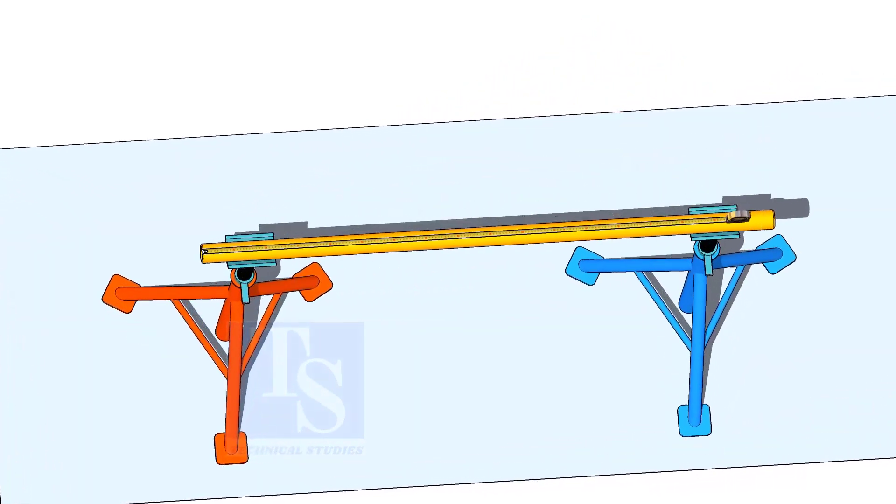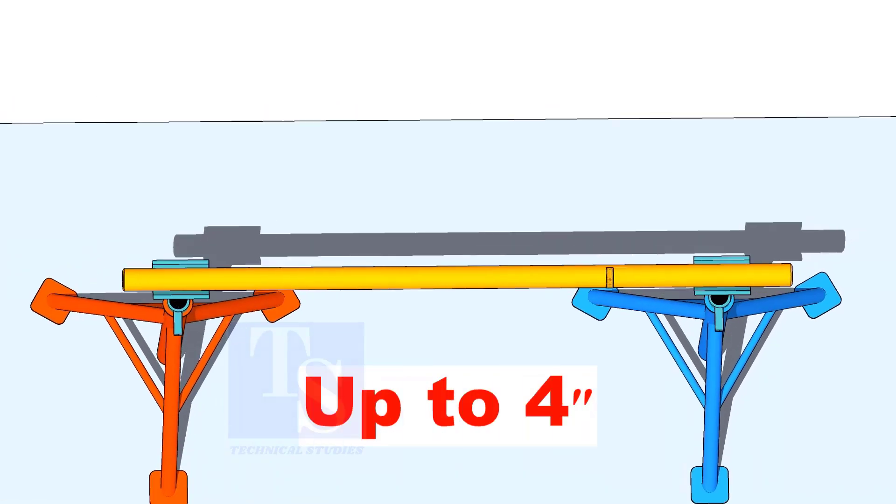For pipes with diameter up to 4 inches, you can use a measuring tape to draw the circular line.